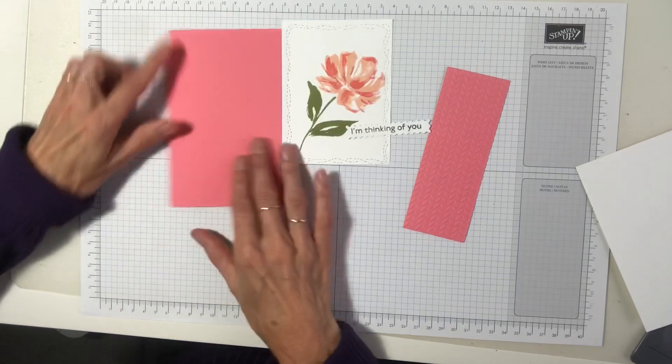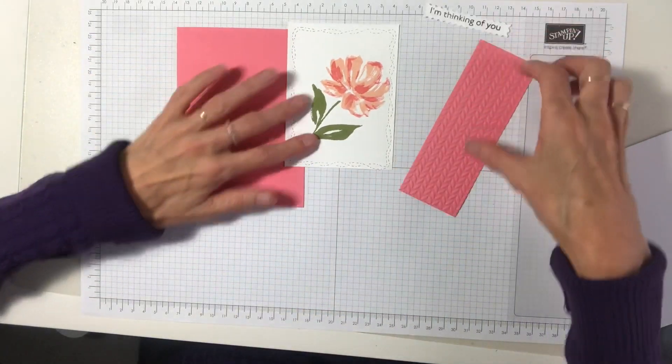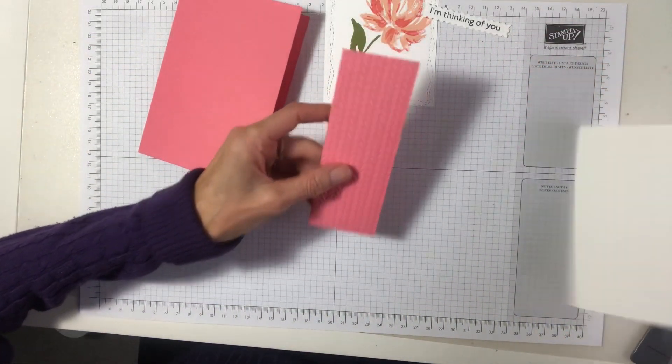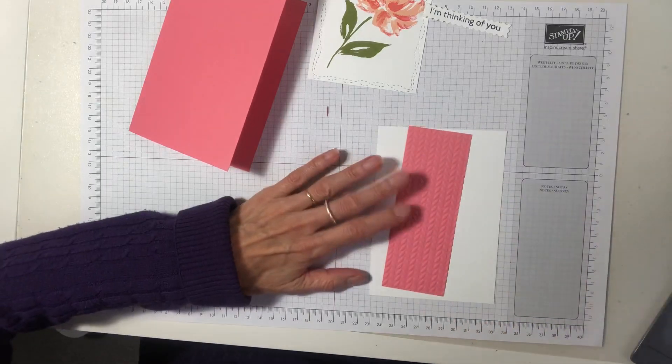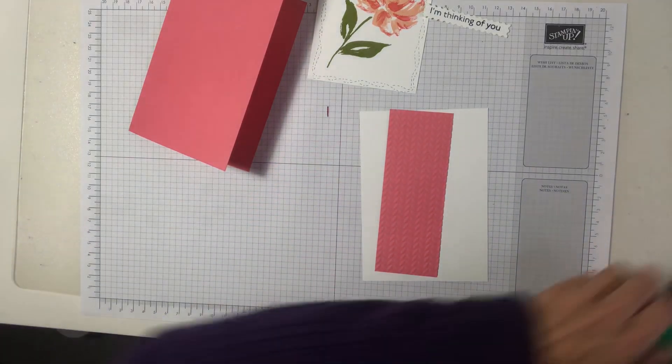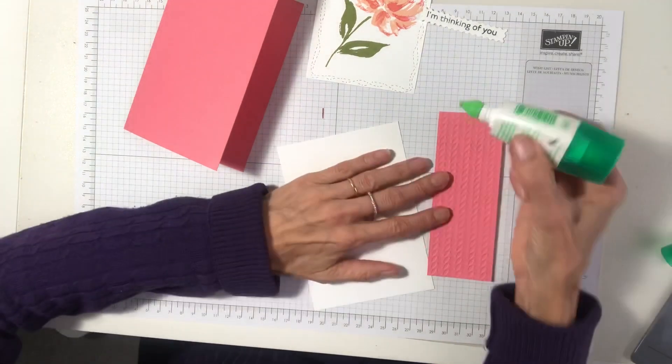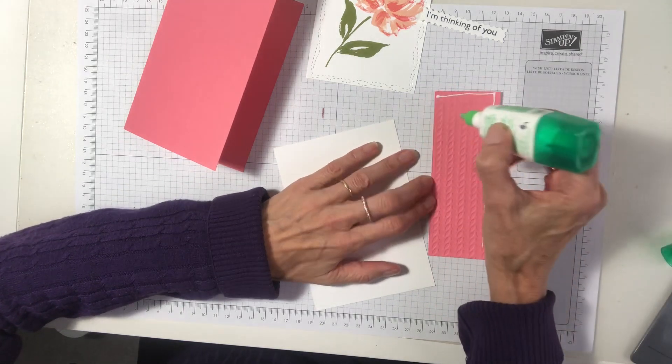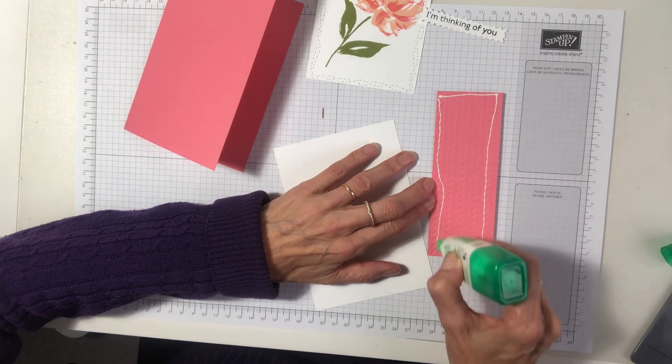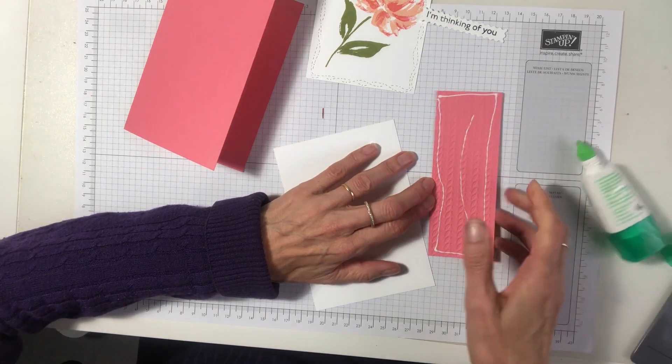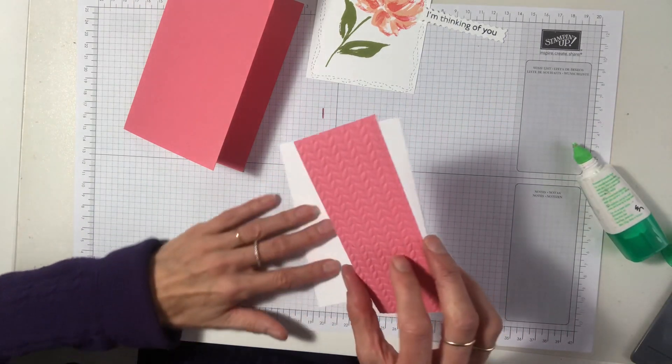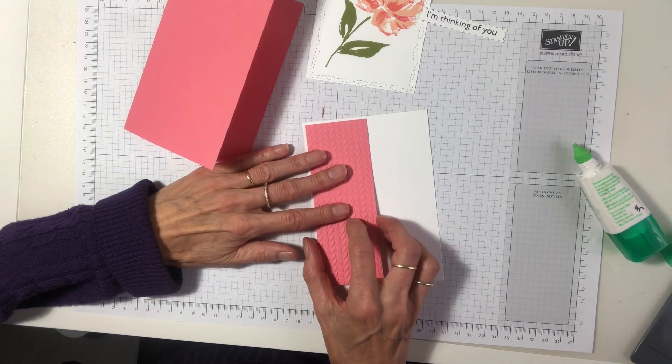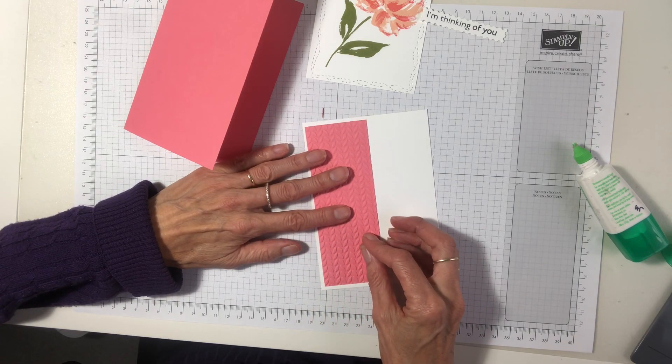I'm using Floaty Flamingo here for our base. So we're just going to stamp. Sorry, glue that down. So I'm using the multipurpose glue for it. Add a little bit of round.